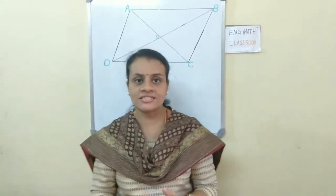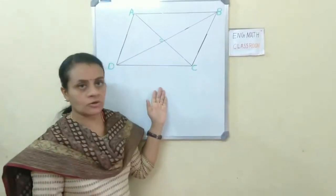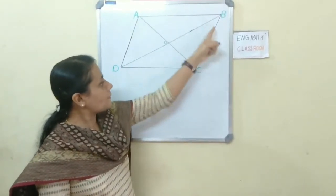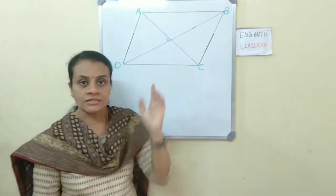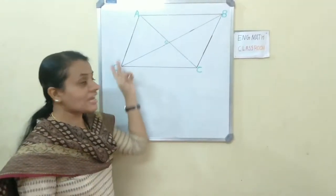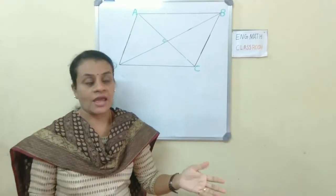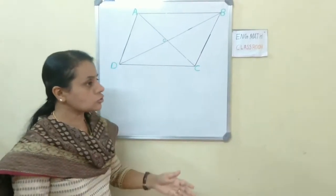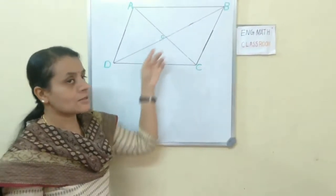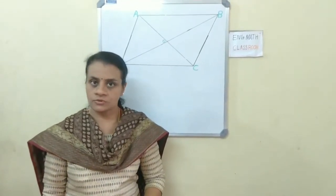Do you understand the question? Here is the parallelogram given. Mark A, B, C, D. In this question, the parallelogram's sides are all equal, and we have to show that the diagonals bisect perpendicularly.